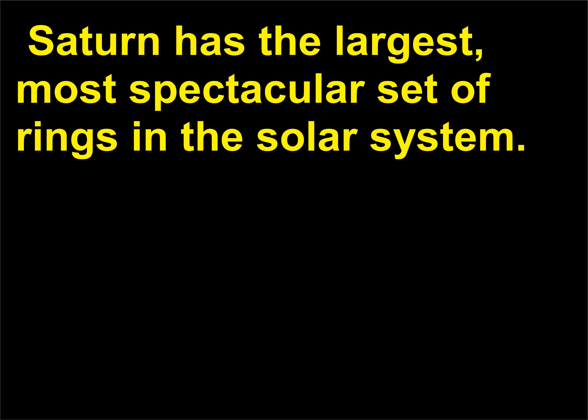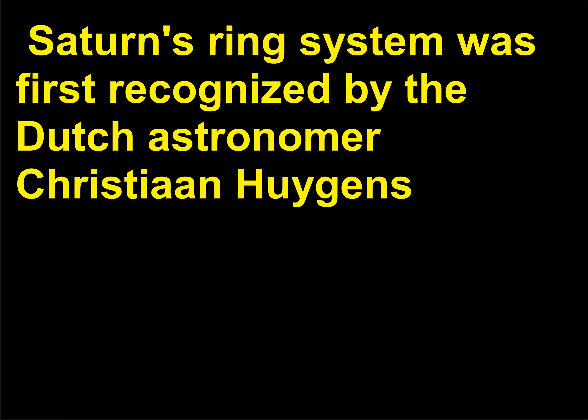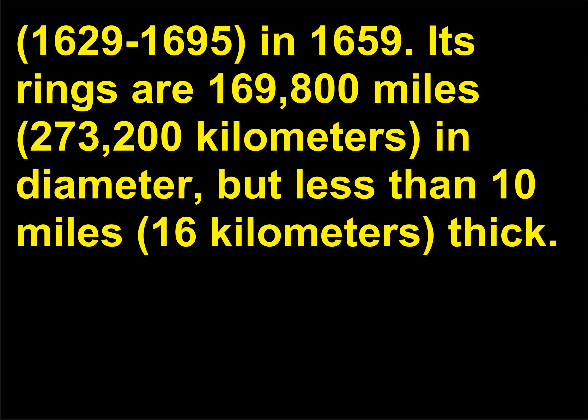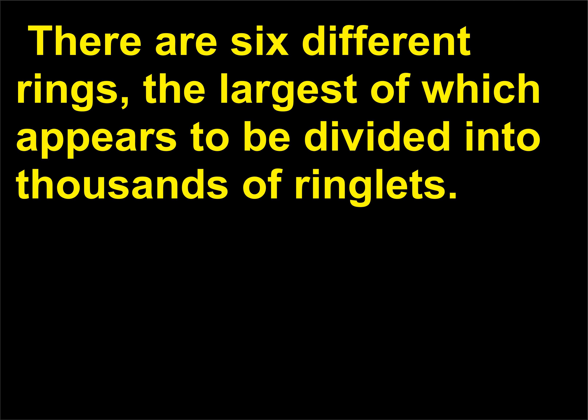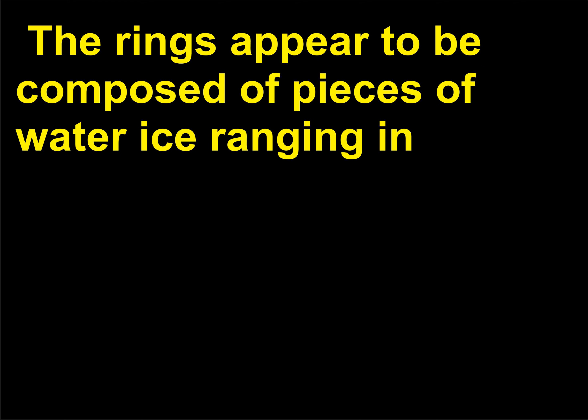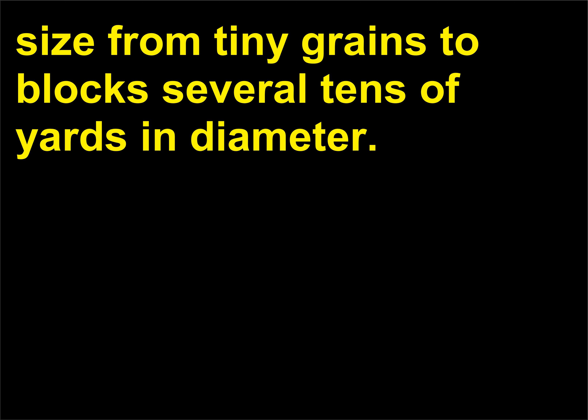Saturn has the largest, most spectacular set of rings in the solar system. Saturn's ring system was first recognized by the Dutch astronomer Christiaan Huygens, 1629–1695, in 1659. Its rings are 169,800 miles, 273,200 kilometers, in diameter, but less than 10 miles, 16 kilometers, thick. There are six different rings, the largest of which appears to be divided into thousands of ringlets. The rings appear to be composed of pieces of water ice ranging in size from tiny grains to blocks several tens of yards in diameter.